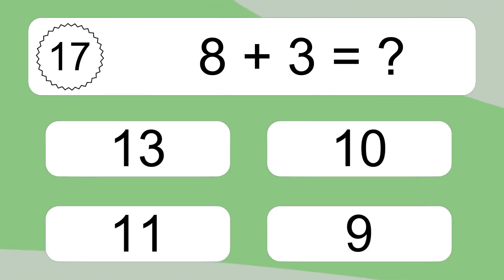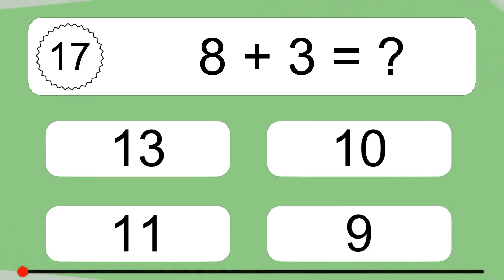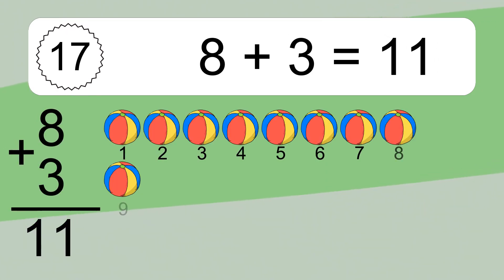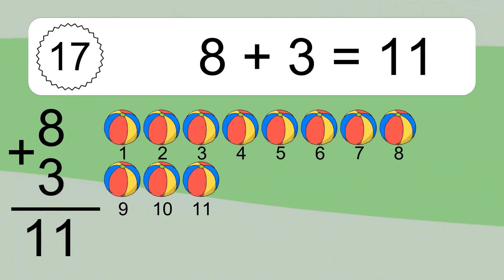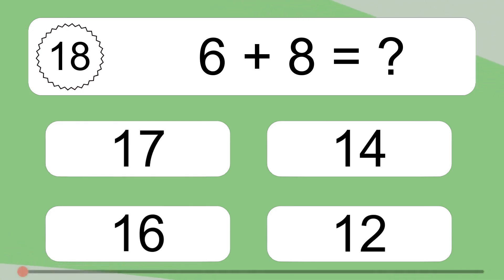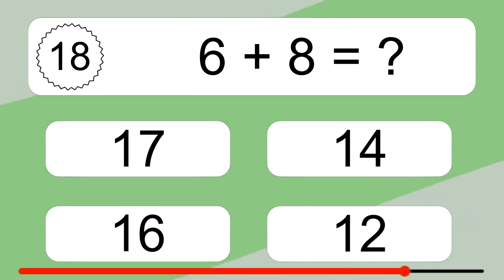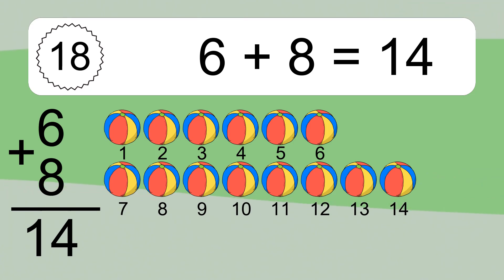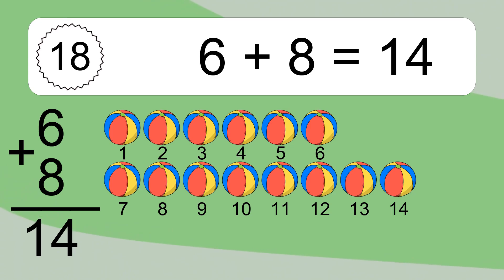8 plus 3 equals what? 8 plus 3 equals 11. Let's count it: 1, 2, 3, 4, 5, 6, 7, 8, 9, 10, 11.